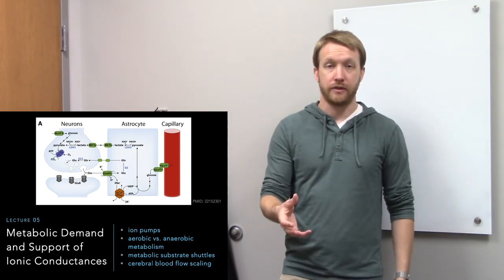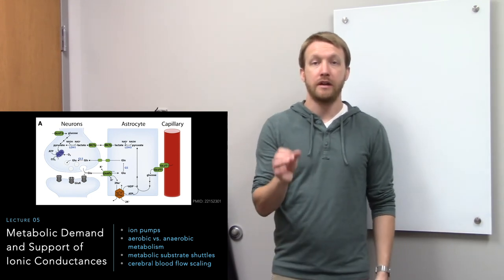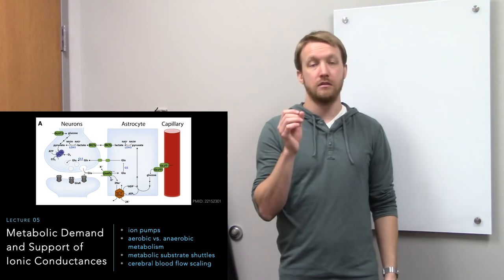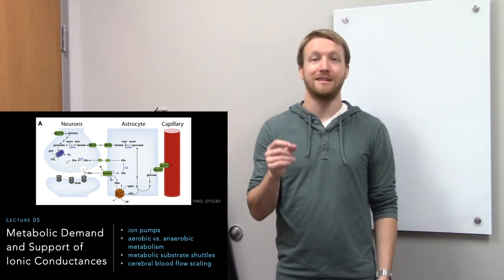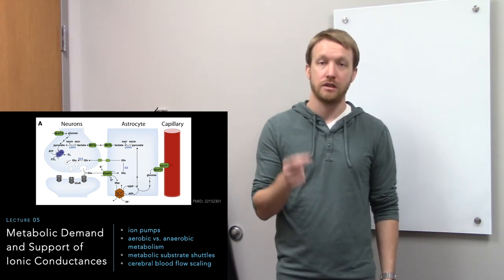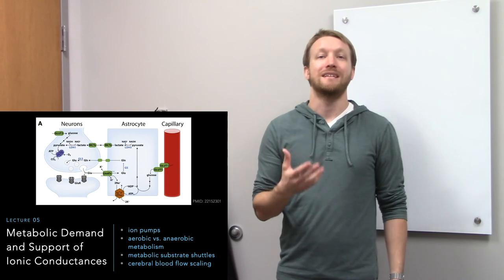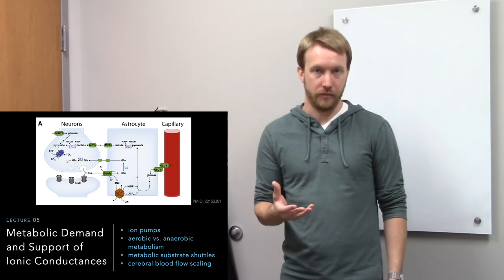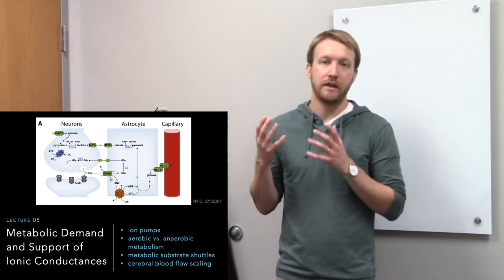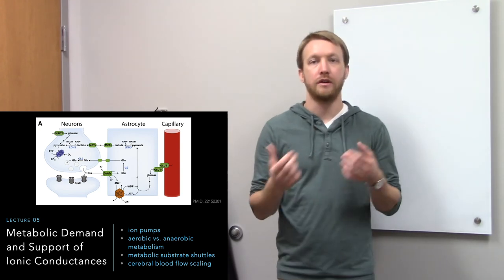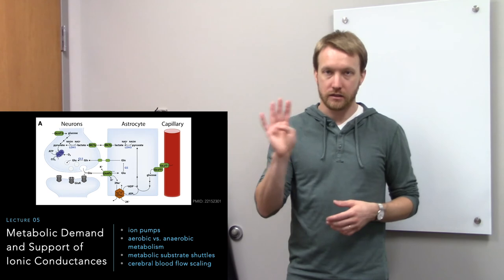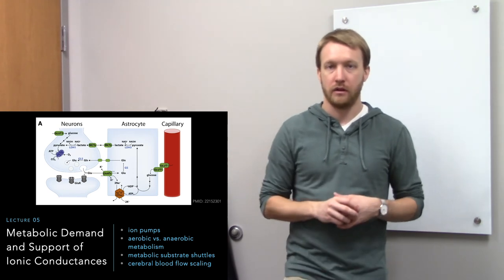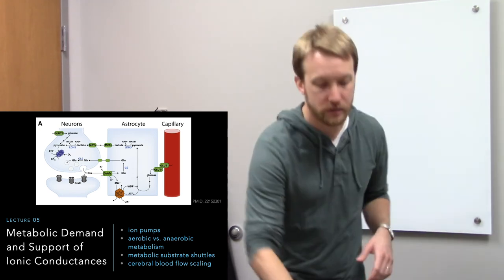We'll also talk about how we scale the amount of blood flow to different areas of the brain based on their level of activity. If neurons are active, they're generating a bill — they need more ATP, and thus more glucose and oxygen, which means they need more blood flow. So how do the blood vessels know when neurons have been active? That's the last part of this talk.